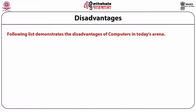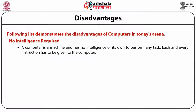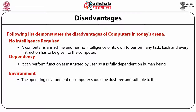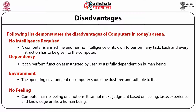The following list demonstrates the disadvantages of computers. There is no intelligence involved. A computer is a machine which has no intelligence of its own to perform any task. Each and every instruction has to be given to the computer and it cannot take any decision on its own. Second is dependency — it can perform functions only as instructed by the user and is fully depending on the human being. Third is the environment — the operating environment should be dust free and suitable for operating. Also, there are no feelings or emotions; it cannot make any judgment based on feeling, taste, experience and knowledge unlike a human being.